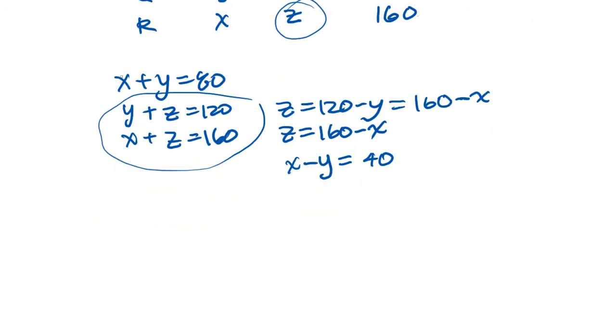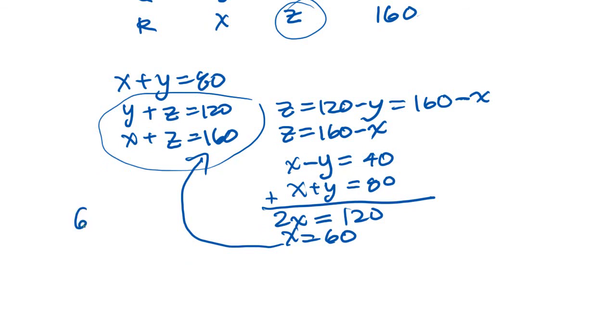Now what we do is we take that and we take the first equation and we add them to get 2X equals 120 because the Y's cancel out. X equals 60. We plug that back into this equation and we get 60 plus Z equals 160. Z equals 100. And Z equals 100 is going to be answer D.